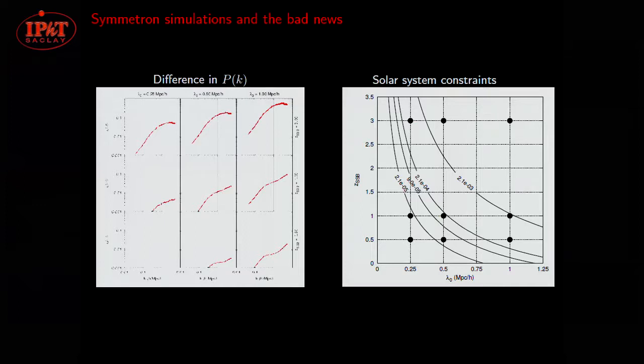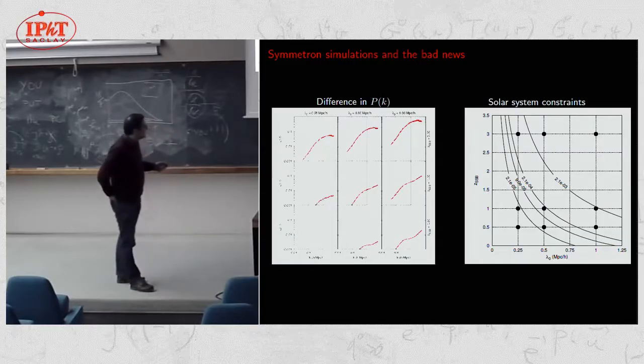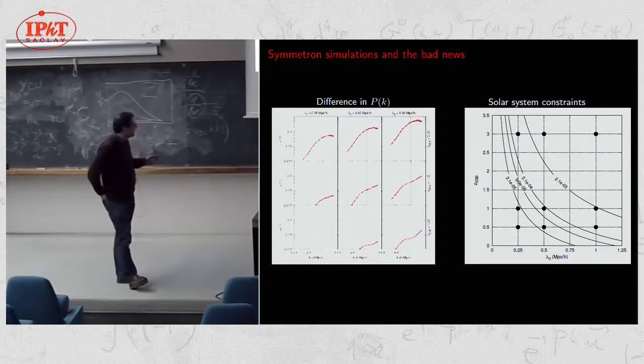So here you switch on the scalar field very late at very late times. And here you switch it on at very early times. And okay, you have models for which the difference between modified gravity and Lambda CDM is on the order of about 10%. And you have features like this break here that doesn't exist here. So you say, okay, I choose models in this region of the parameter space. And then I can have signatures that potentially can be observed.